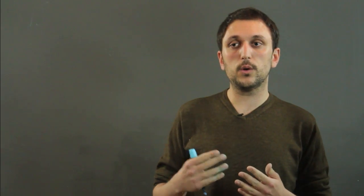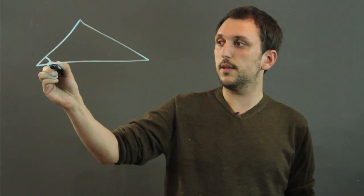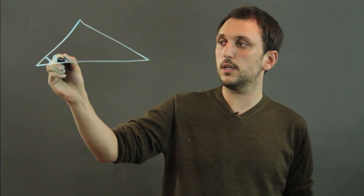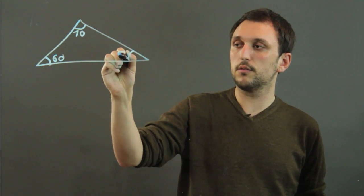A scalene triangle is a triangle in which all three sides and all three angles are different. The three angles still have to add up to 180, but for example, let's say that this was 60, this is 70, and this is 50.